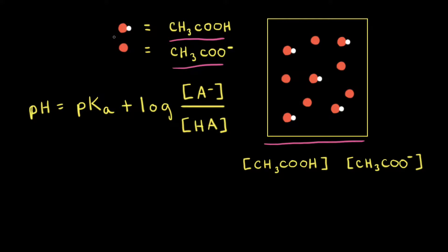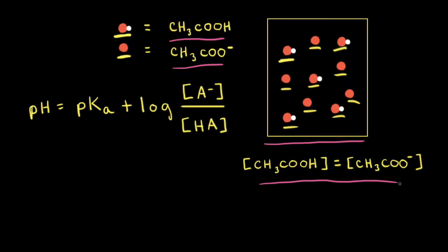Let's count the number of particles of acetic acid in our particulate diagram. In our diagram, there are five particles of acetic acid, and for the acetate anion, there are also five. Because there are five particles of both acetic acid and the acetate anion, the concentration of acetic acid is equal to the concentration of the acetate anion.